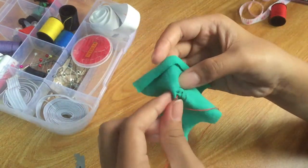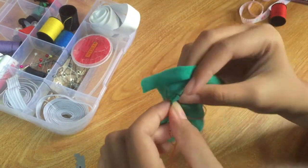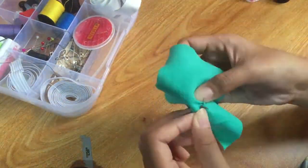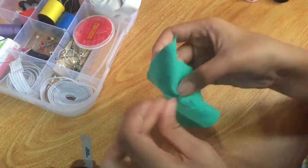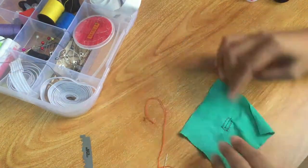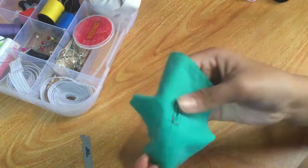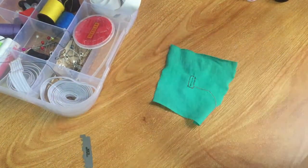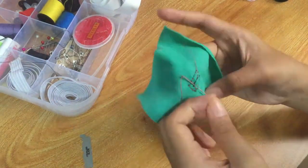Step 2. Outline stitch. Choose a contrasting thread to run a row of small running stitches around the edge of the buttonhole before you cut.